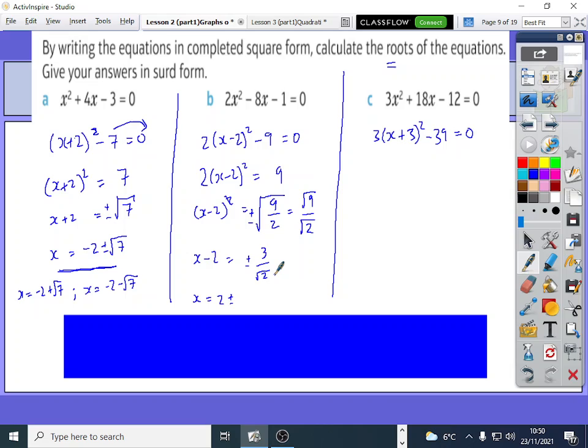Yeah, where you rationalize the denominator. So if you rationalize the denominator here what you do is times top and bottom by root 2. This will end up being, you put the 2 over, this will end up being 2 plus or minus 3 root 2 over 2. So that will be the final solution.